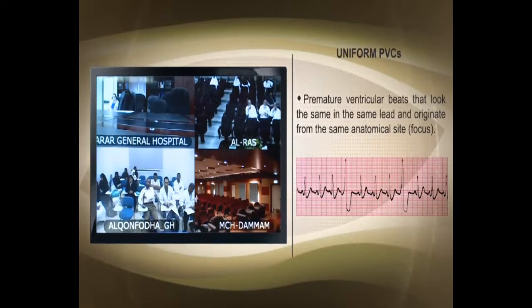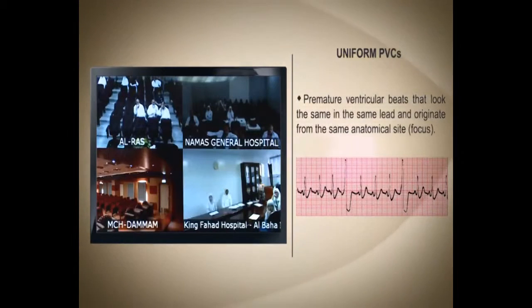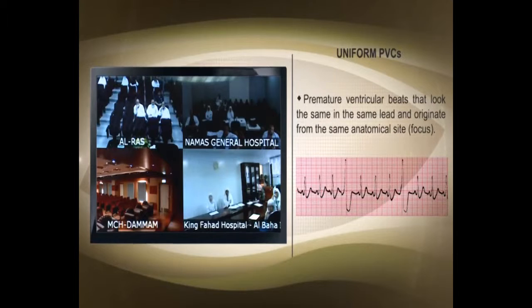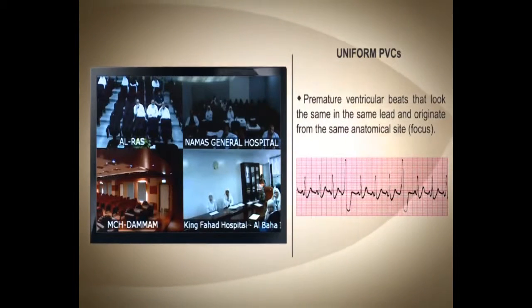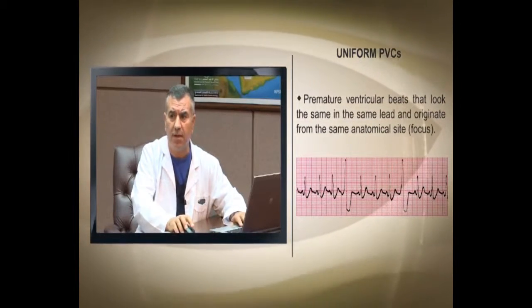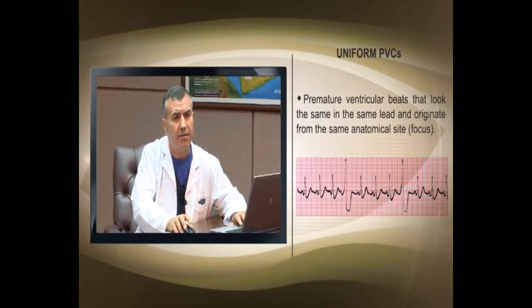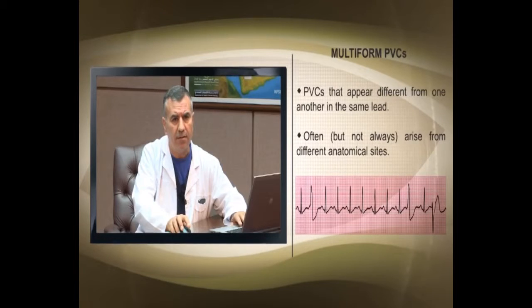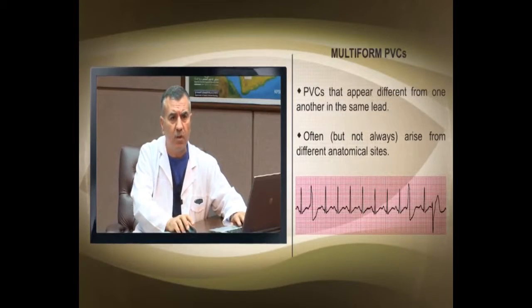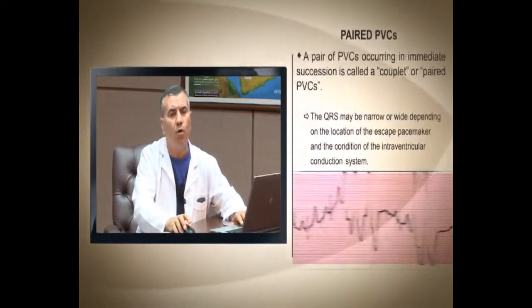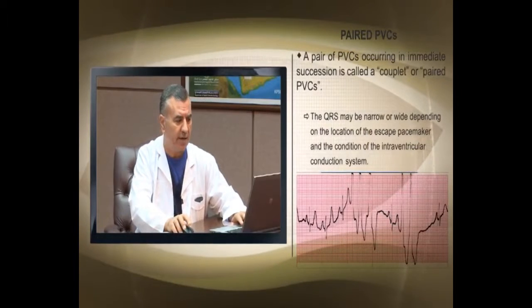Premature ventricular complexes (PVCs) are wide, bizarre-shaped QRS complexes within an underlying rhythm, with no preceding P wave and a T wave opposite in direction to the QRS. Treatment: correct electrolytes and use antiarrhythmics. PVCs may be multifocal with different shapes, or appear as couplets and triplets. Three or more PVCs in a row constitute a run of PVCs or non-sustained ventricular tachycardia.